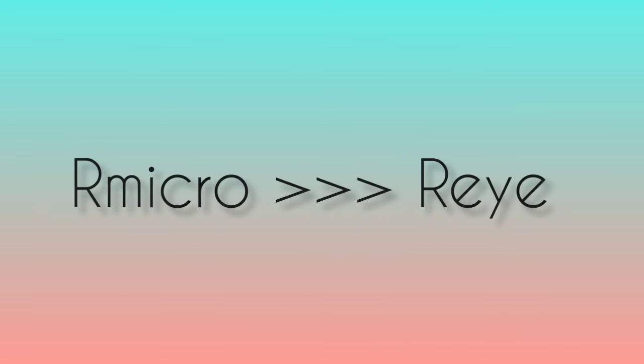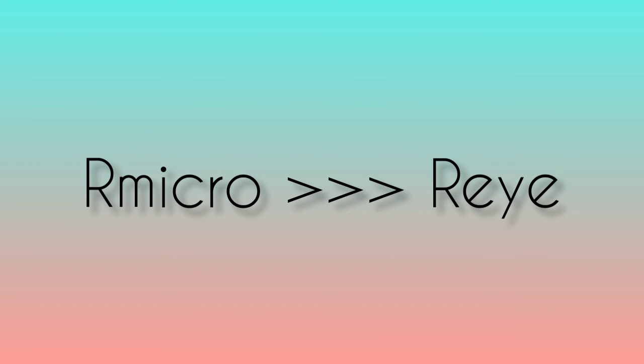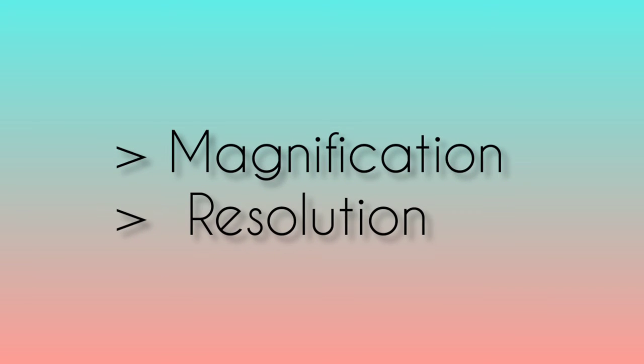The resolution of a microscope is far better than the resolution of the eye. These are two important properties of a microscope: the first one is magnification and the second one is resolution.